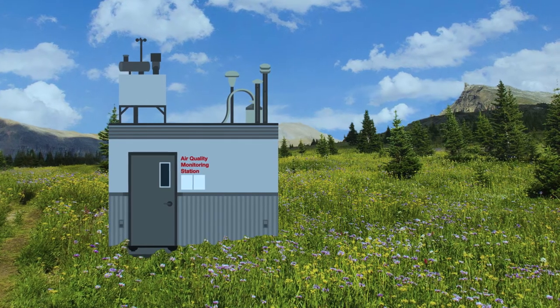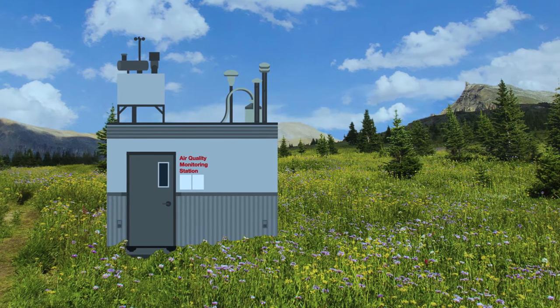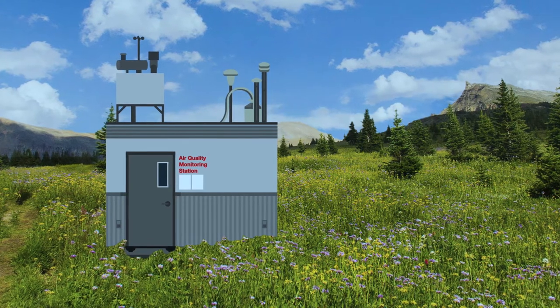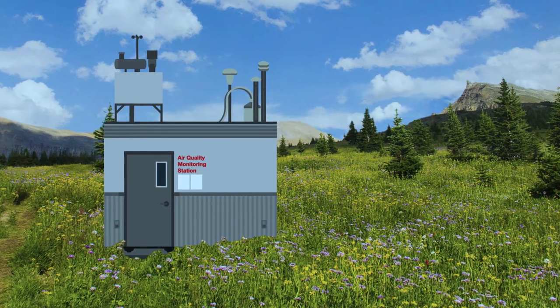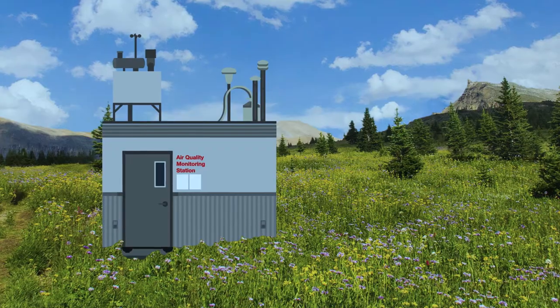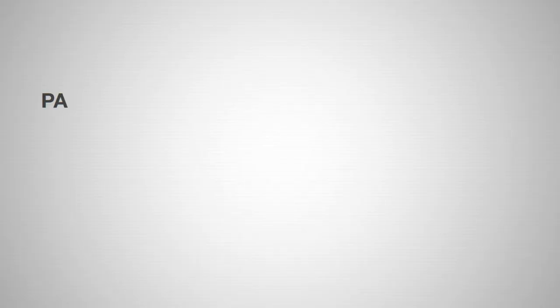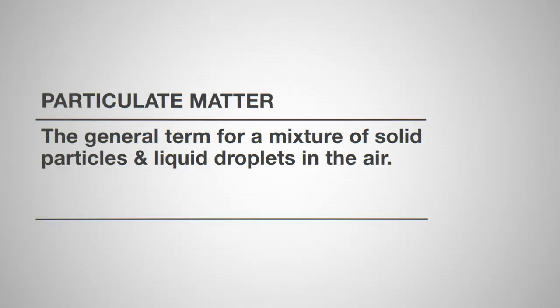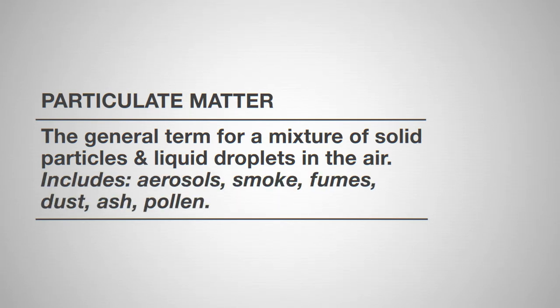Let's dig into a hypothetical example. Say a region is monitored and assessed for an air quality indicator — fine particulate matter. Particulate matter is the general term we use for a mixture of solid particles and liquid droplets in the air. It includes things like aerosols, smoke, fumes, dust, ash, and pollen. The composition of particulate matter varies with place, season, and weather conditions.